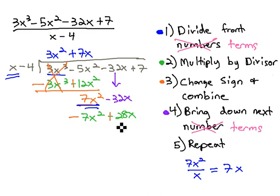We change the signs and combine. 7x and negative 7x are 0, and negative 32x plus 28x is negative 4x. Bring down the next term, the plus 7, and repeat the process.